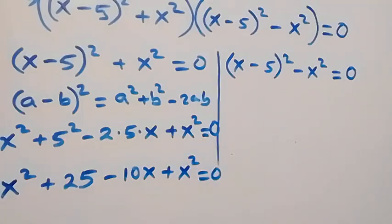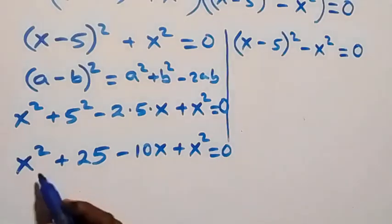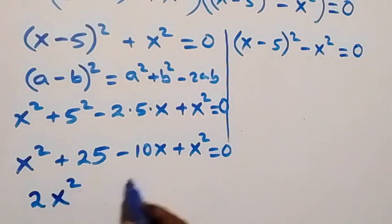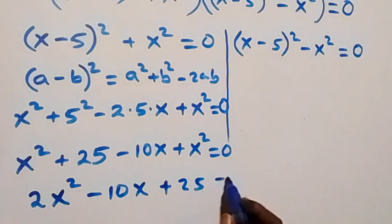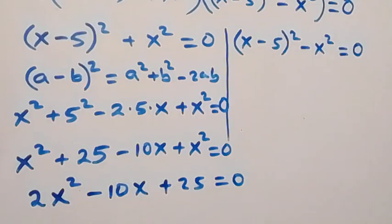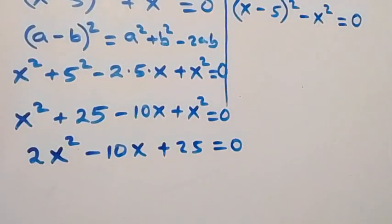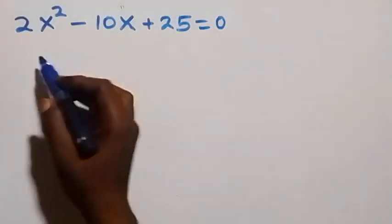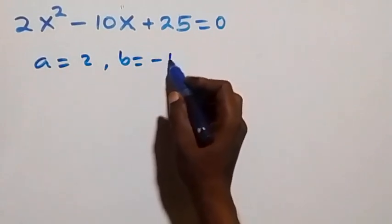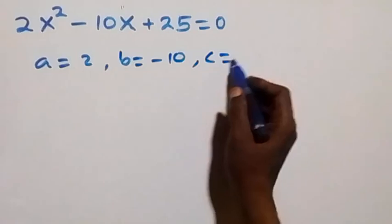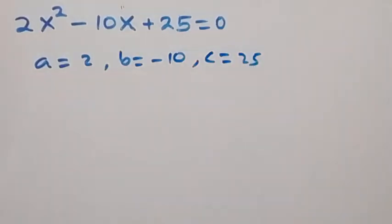When we simplify, x squared plus x squared becomes 2x squared, minus 10x, plus 25 equals to 0. This is a quadratic equation where a equals 2, b equals minus 10, and c equals 25.